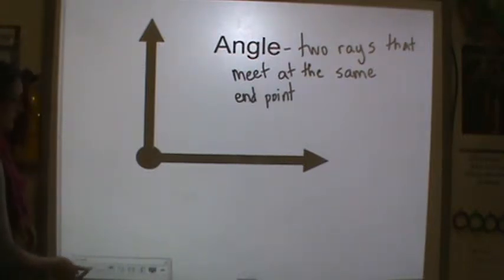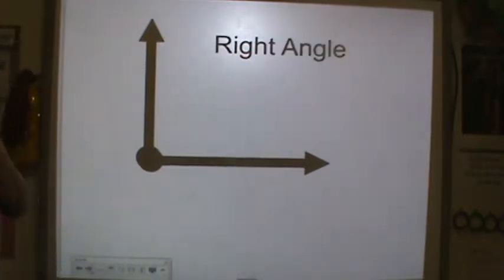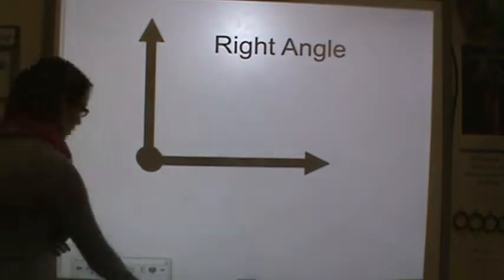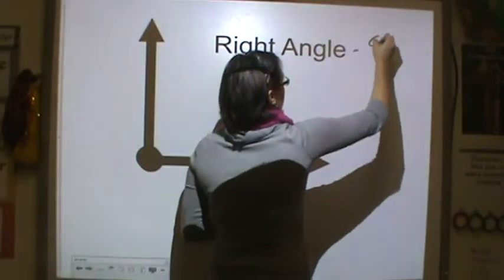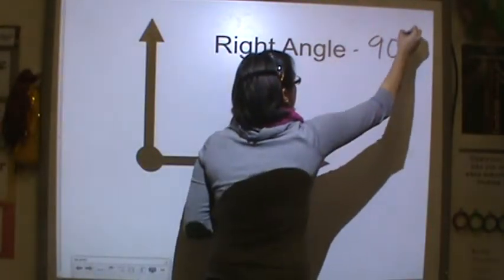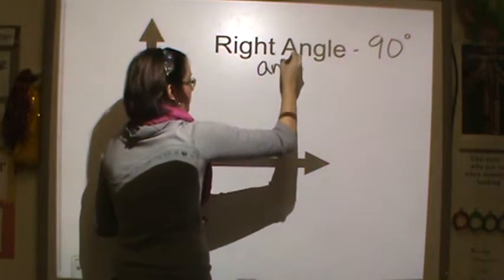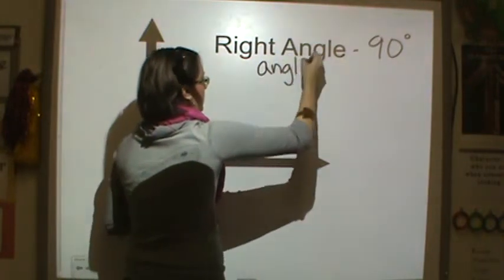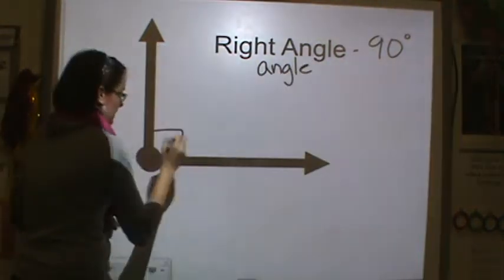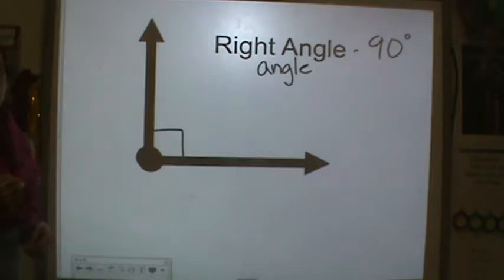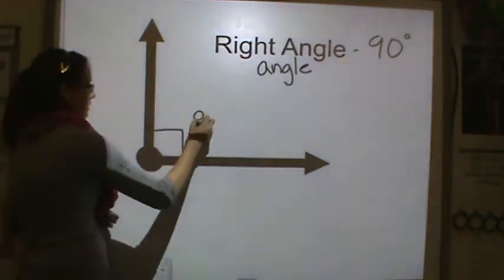A right angle is a 90-degree angle. It meets at 90 degrees — it is a corner. That's how I always remember it: 90-degree angle.